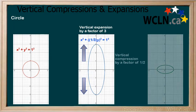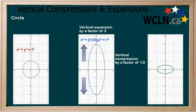Next, we will apply a vertical compression to the original circle by a factor of one half. We do this by multiplying y by 2, and we can see how the graph changes accordingly.